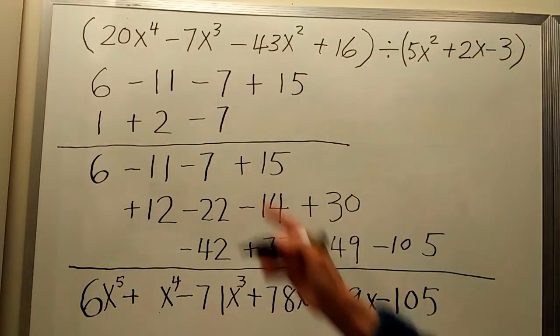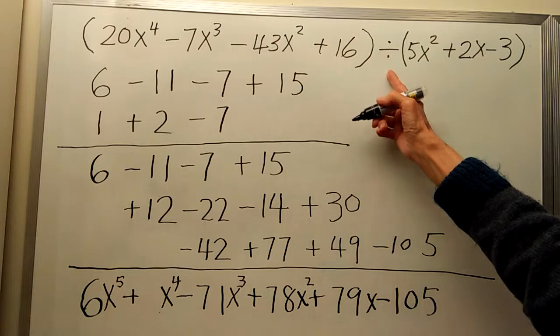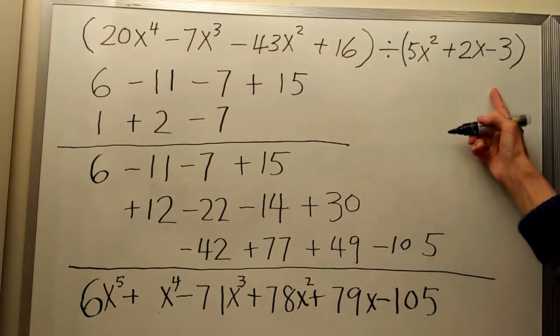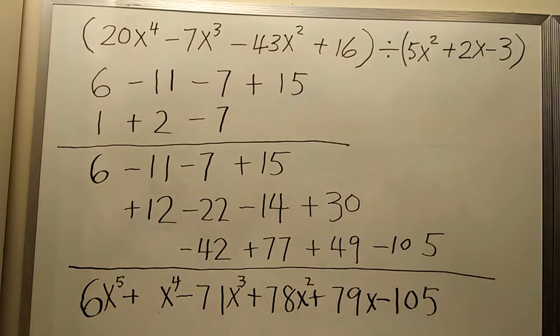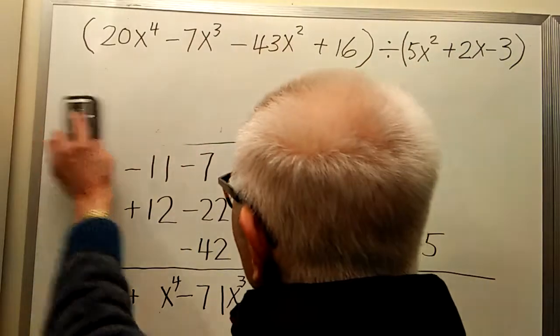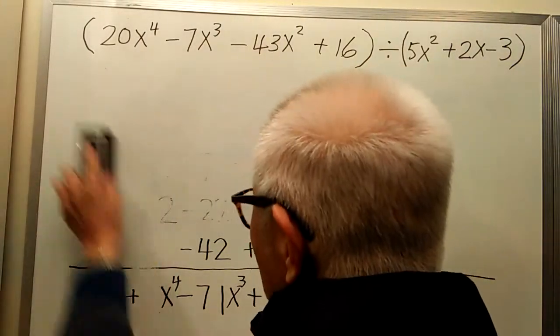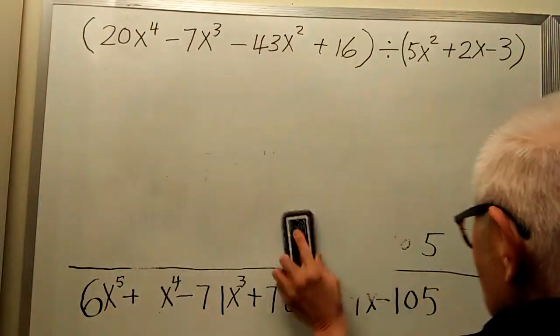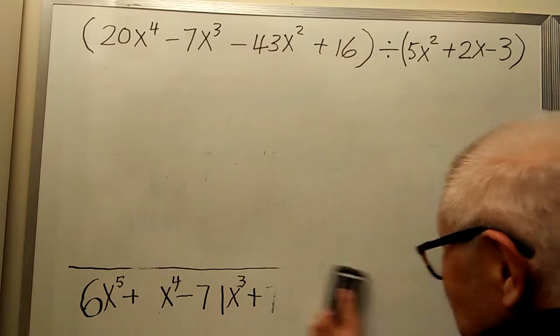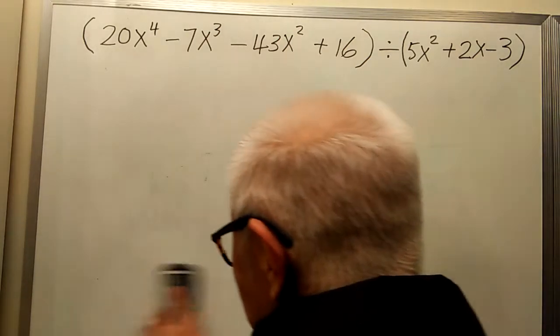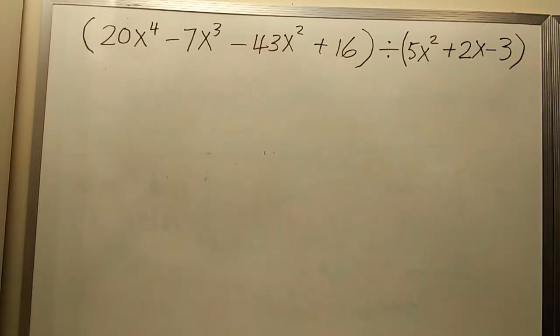We have one polynomial divided by another polynomial. Let's use the same method, detached coefficients. We write only the coefficients without writing x.